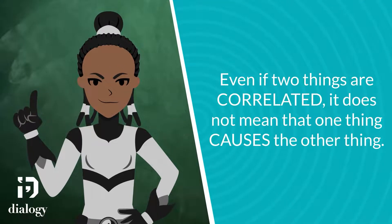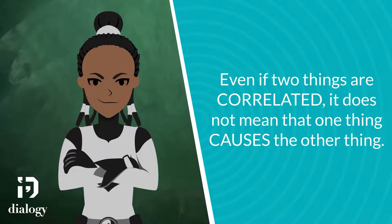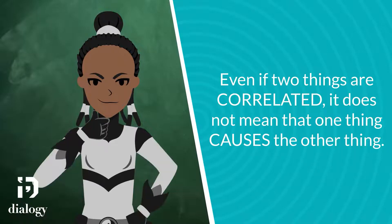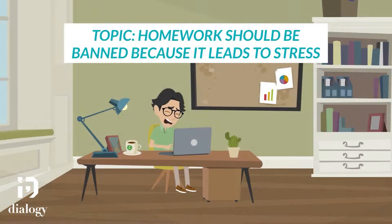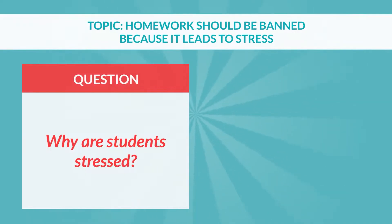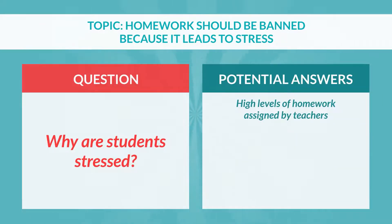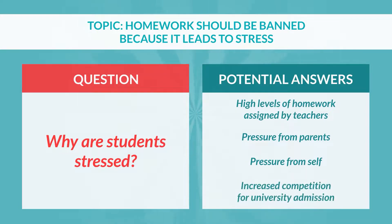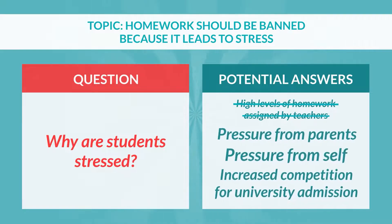Now, just because two things are correlated to each other, as we see in our example of ice cream and exercise, it does not mean that one thing causes the other. This is important in debate because our topics usually require us to focus on a particular cause of a problem. If we are debating about the problem of students being too stressed, we can ask: what is causing the stress? Is it homework assigned by teachers? Pressure from parents? Pressure from students themselves? Or the increased competition of university admissions? If we get rid of homework, will it eliminate the stress of students, or will students simply get pressure from other areas?